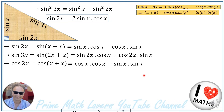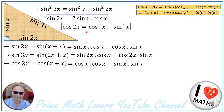Using the cosine addition identity, cosine of 2x equals cosine squared of x minus sine squared of x. Now we use this expression for sine of 2x and cosine of 2x to calculate sine of 3x.